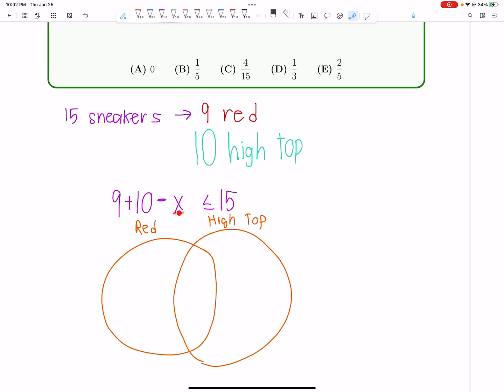Because we subtracted X because it was over-counted twice. It was counted as part of the red shoes and counted as part of the high-top shoes. So 9 plus 10 minus X.